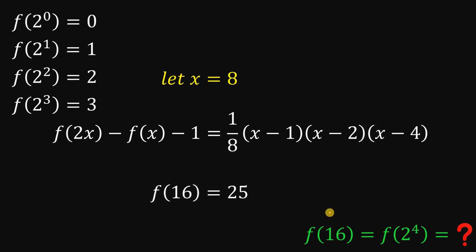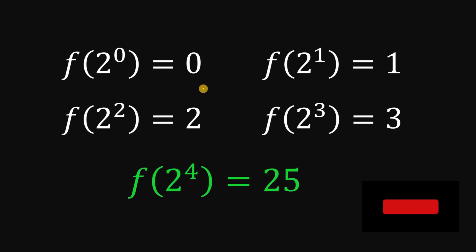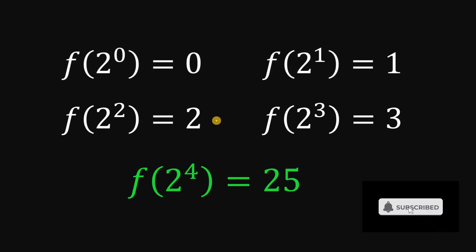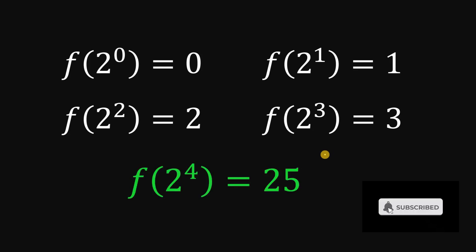And this is also the value of f of 2 raised to the fourth power. Therefore, given that f of 2 raised to 0 equals 0, f of 2 raised to 1 equals 1, f of 2 raised to 2 equals 2, and f of 2 raised to 3 equals 3, the numerical value of f of 2 raised to the fourth power is simply equal to 25.